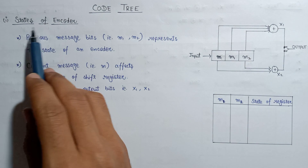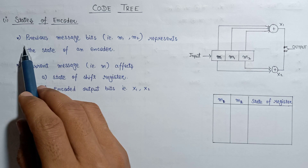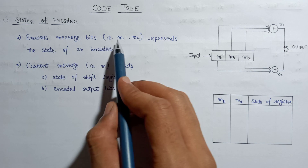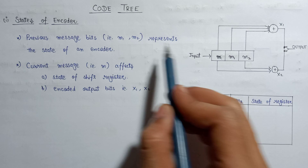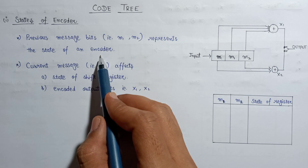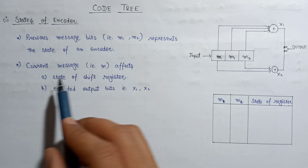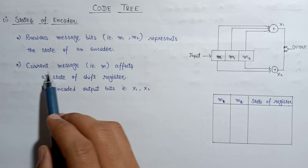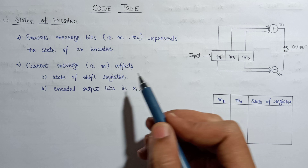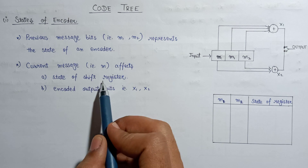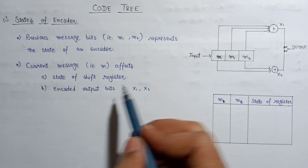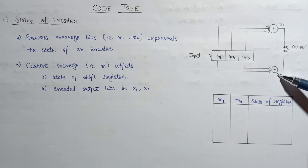Now let us discuss about the states of the encoder. The previous message bits m1 and m2 represent the state of the encoder. The current message bit m affects two things: the state of the shift register as well as the encoded outputs x1 and x2.